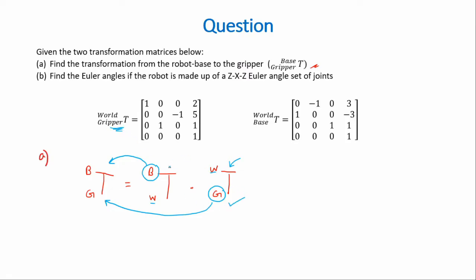The second matrix is the world relative to the base. However, the question gives us the opposite transformation matrix, that is the base relative to the world. We can find the required matrix by simply taking the inverse of the given matrix. And this multiplied with the transformation matrix of the gripper to the world would give us our final answer. So let's see how we can solve this.